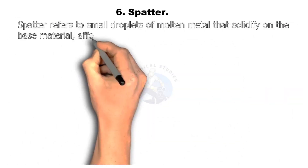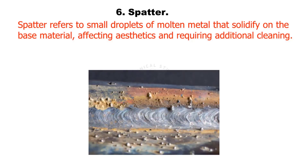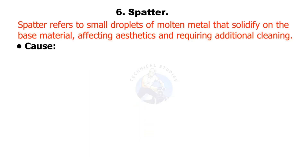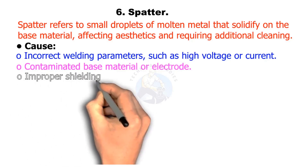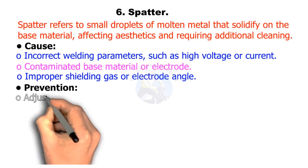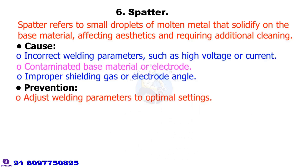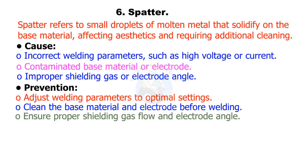Spatter refers to small droplets of molten metal that solidify on the base material, affecting aesthetics and requiring additional cleaning. Causes include incorrect welding parameters such as high voltage or current, contaminated base material or electrode, and improper shielding gas or electrode angle. Prevention: adjust welding parameters to optimal settings, clean the base material and electrode before welding, and ensure proper shielding gas flow and electrode angle.